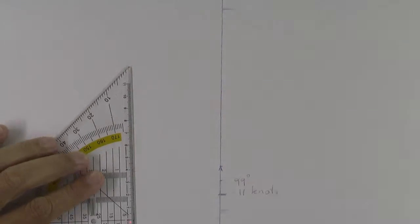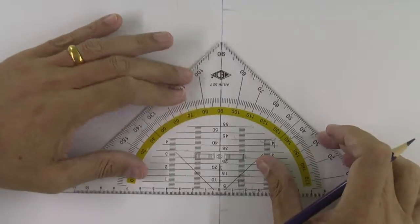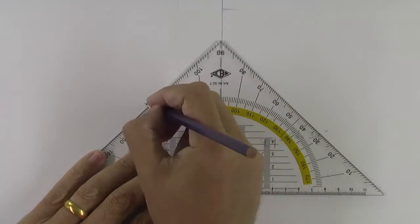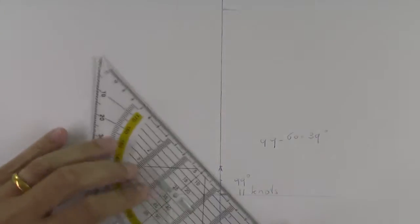The first ship, it's a 49 meters ship, it's 99 degrees. It has a speed of 11.5 knots and we calculate relative.